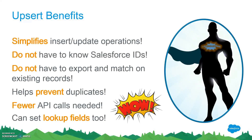Upsert benefits. Upsert simplifies the insert and update operations dramatically. We no longer need to know about the Salesforce record IDs, and we're out of the business of needing to export data from production and match on those records doing VLOOKUP cross-references. This process also helps prevent duplicates, because Salesforce is matching on that external ID value — if it finds a match, it updates the record rather than inserting a duplicate. And by far, this uses fewer API calls because we're not needing to export the data from Salesforce. We've cut that process out completely, saving us time. The Upsert operation can also set those lookup fields in one operation.